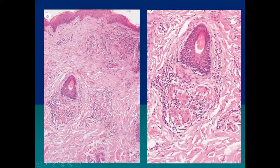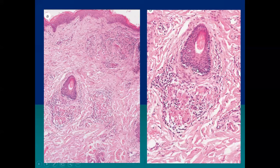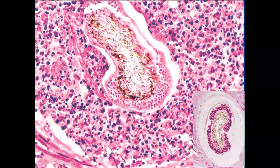These two images show granulomas surrounding the hair follicles. When granulomas are seen around hair follicles, the differential diagnoses are granulomatous rosacea, lichen scrofulosorum, and Majocchi's granuloma. In Majocchi's granuloma, the granulomas surround the hair follicles and fungal spores are visible within the hair follicles, highlighted by PAS stain.